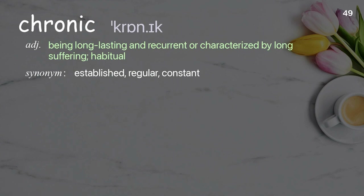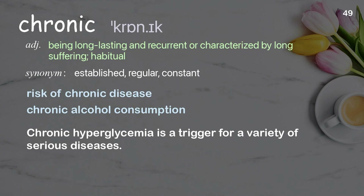Chronic: being long-lasting and recurrent or characterized by long-suffering; habitual. Examples: Risk of chronic disease. Chronic alcohol consumption. Chronic hyperglycemia is a trigger for a variety of serious diseases.